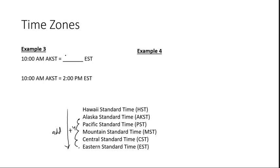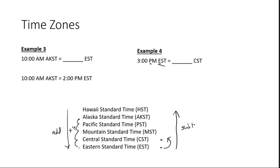Example four: 3 p.m. Eastern Standard Time, converting to Central Standard Time. Eastern is further east, and Central is one zone back, so we're going west — meaning we subtract. We subtract 1 hour, so 3 minus 1 gives us 2 o'clock. So 3 p.m. Eastern Standard Time is 2 p.m. Central Standard Time.